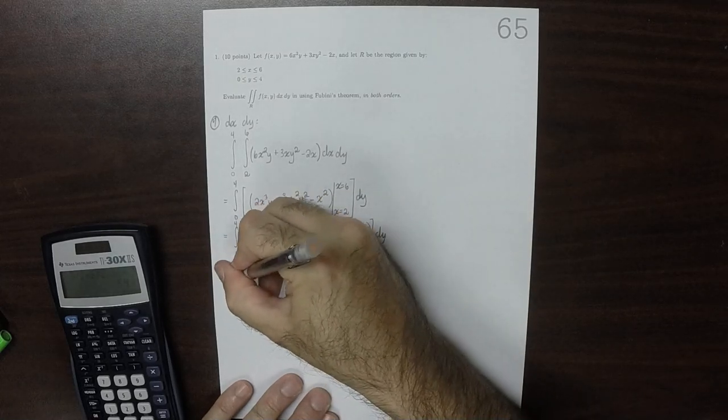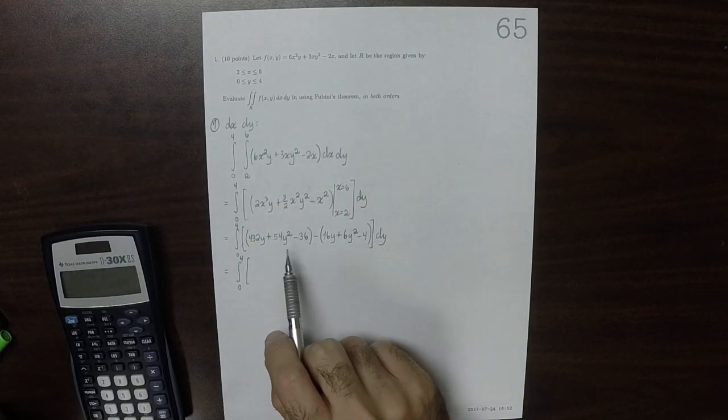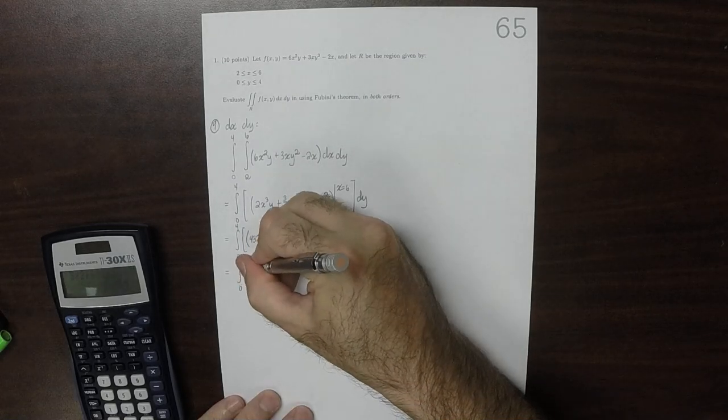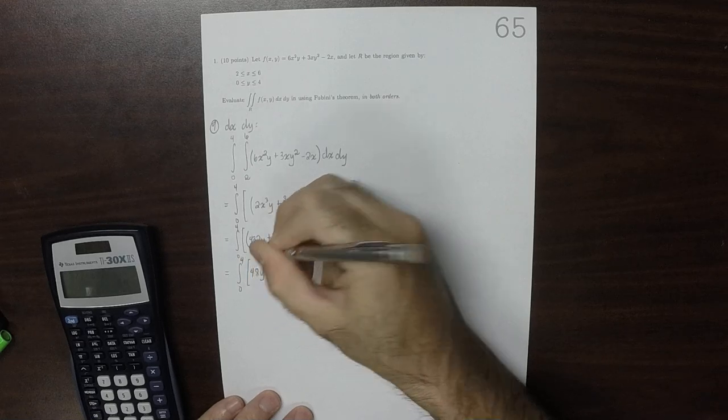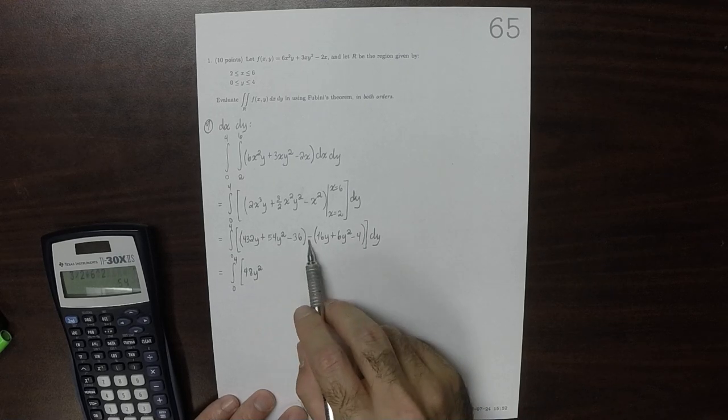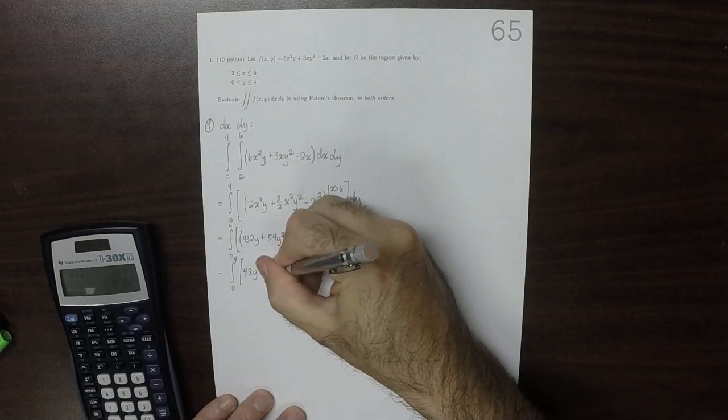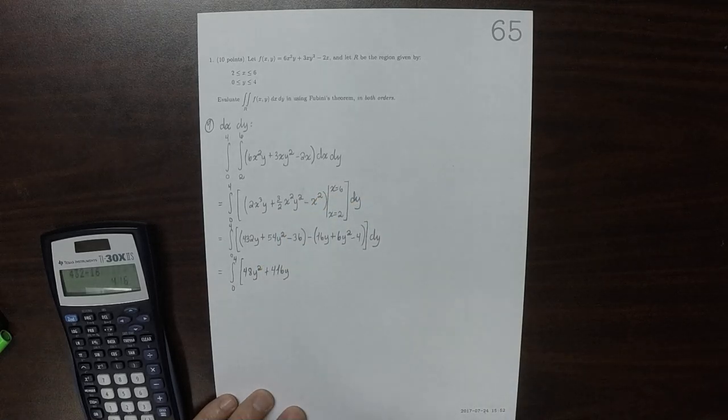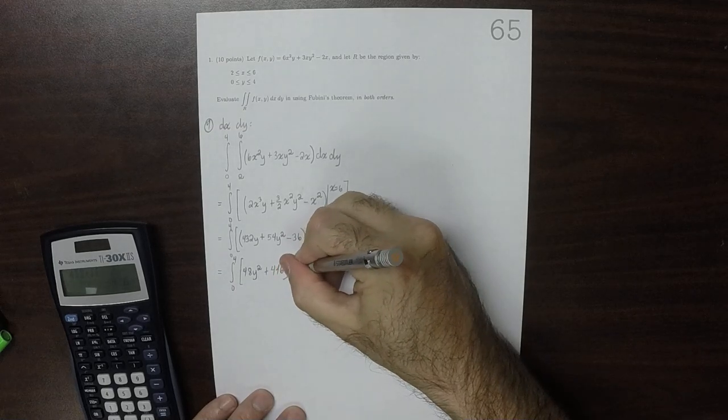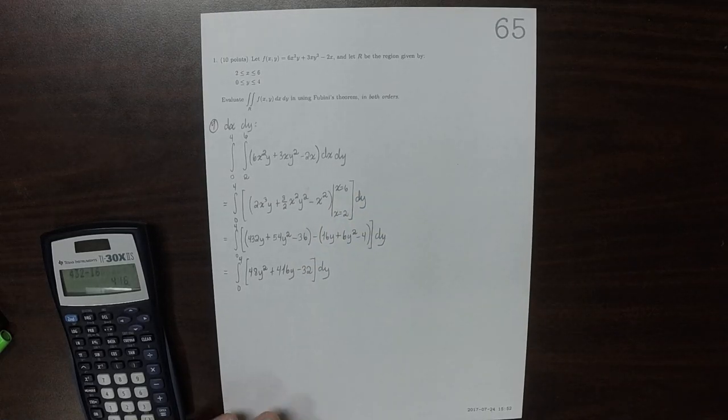Simplifying this, let's collect all the y squareds together. So there's 54 minus 6, so that's 48 y squared. Now let's collect all the y's, so 432 minus 16 is 416. And now let's collect the units together, so negative 36 minus negative 4 is negative 32. Now we're done with all the x's.